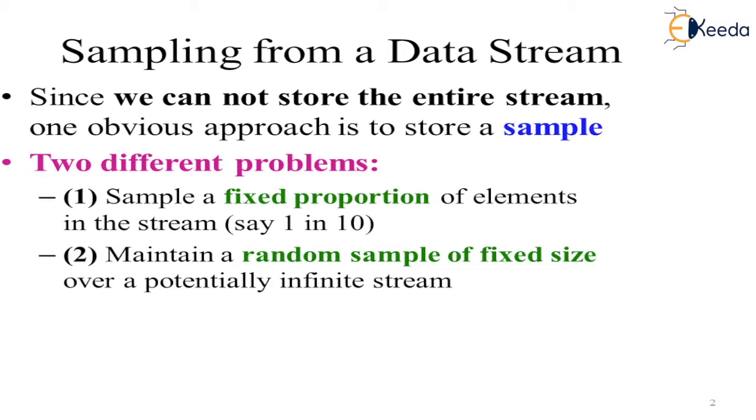One, sample a fixed proportion of elements in the stream, say 1 in 10. Suppose there are 10 elements, out of 10 we are selecting 1. That is the fixed proportion of amount is selected. Second, maintain a random sample of fixed size over a potentially infinite stream. So we are selecting randomly from the stream, from the elements but a fixed size. Maybe 10 elements, maybe 20 elements, depends on that.